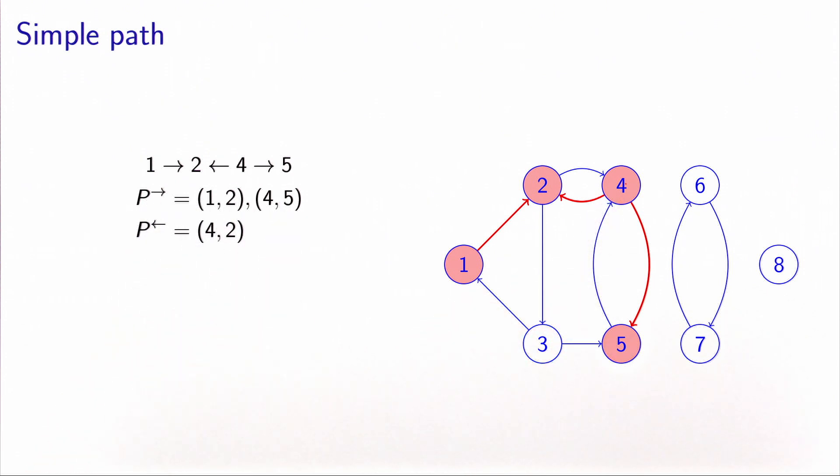Each node appears once in the path, so we have a simple path. And now we have 3 arcs in the path: the 2 forward arcs 1, 2 and 4, 5, and the backward arc, which is 4, 2.